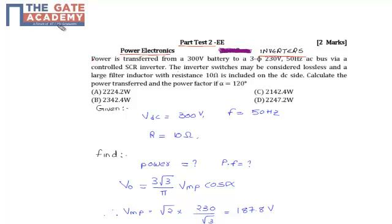In this question, power is transferred from a 300V battery to a 3-phase 230V 50Hz AC bus via a controlled inverter. The working principle is to convert the DC supply to the alternating supply, which is AC supply.